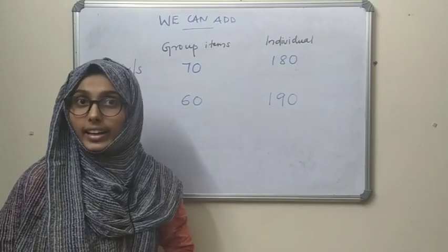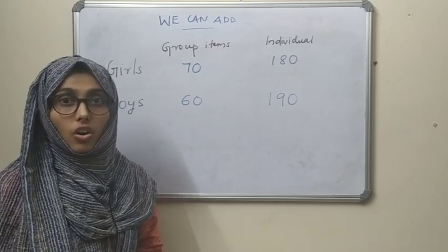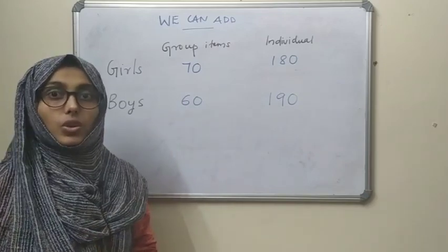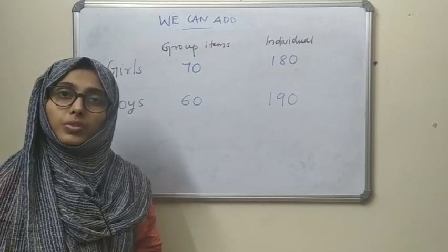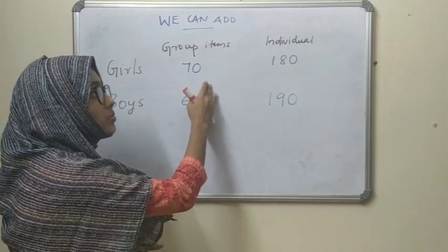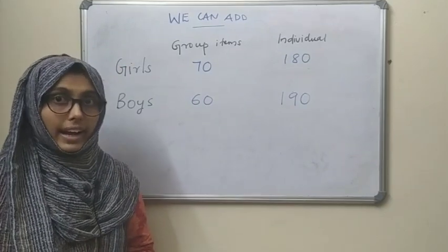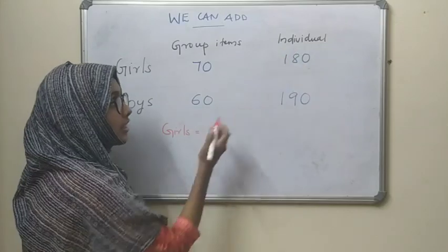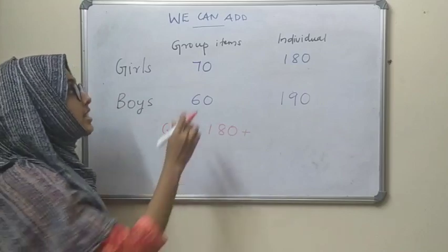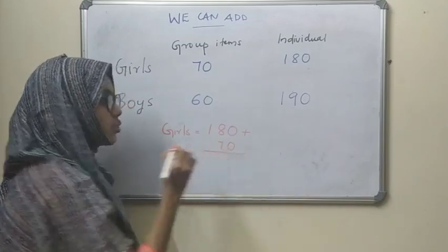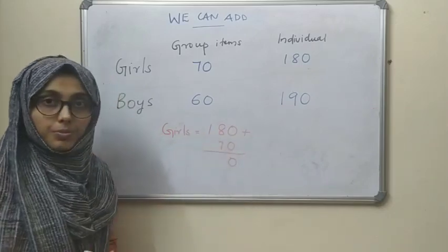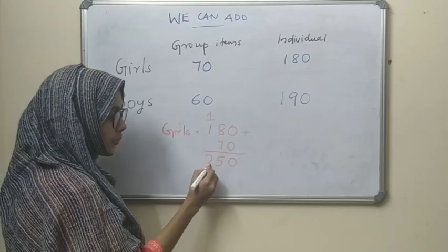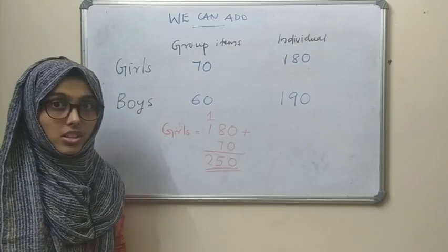Boys scored 60 points in group items and 190 points in individual items. Now we want to calculate the total score of girls and the total score of boys. To find the total score of girls, we add group item score and individual item score: 180 plus 70. 0 plus 0 is 0. 8 plus 7 is 15 — write 5 and carry 1. 1 plus 1 is 2. So 250 is the total score for girls.